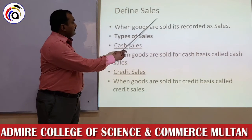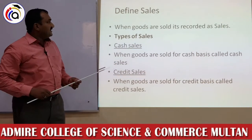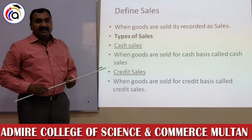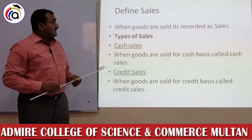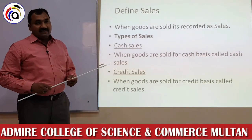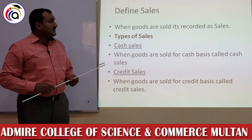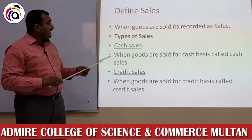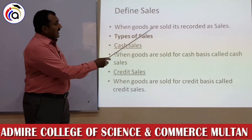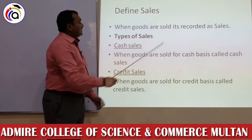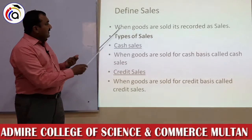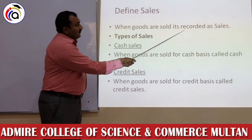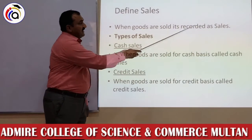Defined Sales. Hamari Terminologist mein Sales bahut important hai. Aapko yaad hoga, start mein maine aapko bataya tha — Sales Manufacturing Business aur Trading Business. Ye do business aise hain ki koi bhi product ko jab sale karte hain, to wo unki aamdani hoti hai. When goods are sold, it's recorded as sales. Jab ashia ko farokht kiya jata hai, wo karobar mein Sales ke naam se darj hoti hai.